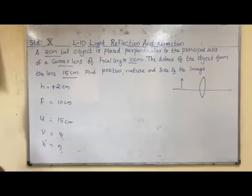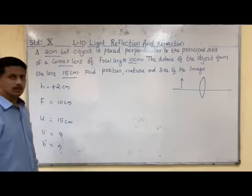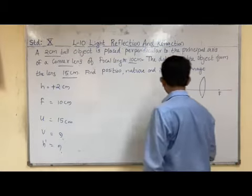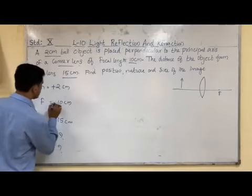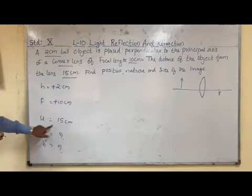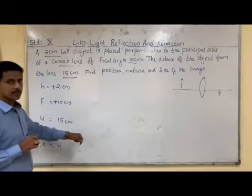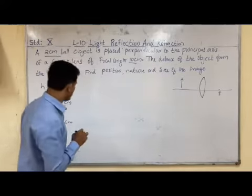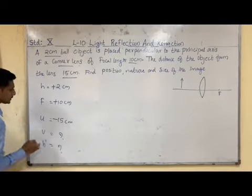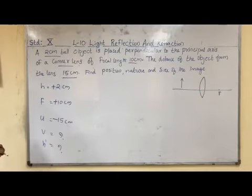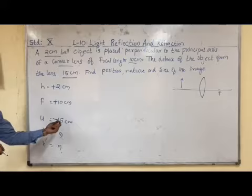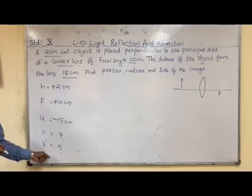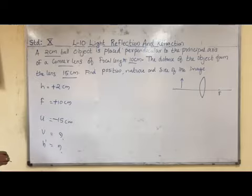The focal length is given, and for a convex lens the focal length is positive — focus is on the right side. Now, the object distance u: the object is on the left side, so u is considered as negative according to the Cartesian sign convention. After applying sign conventions, we are going to find the value of v and h'.